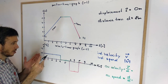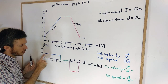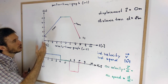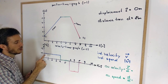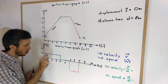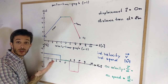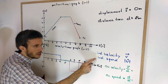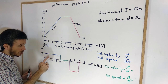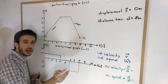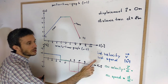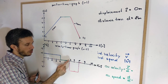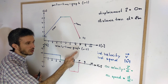The instantaneous velocity is what we have plotted on the velocity-time graph, using our rules of slope or derivation to find the velocity at any moment in time. Instantaneous velocity is a vector, because we have plus or negative signs giving us direction. Instantaneous speed would be the same thing, just everything positive — so we would flip the negative portion to positive.